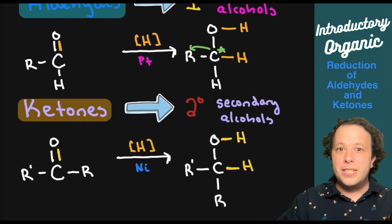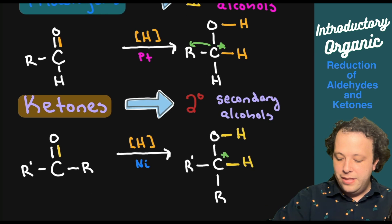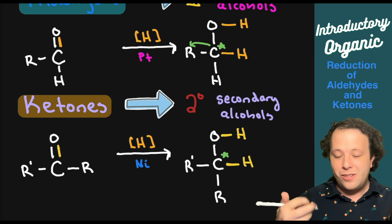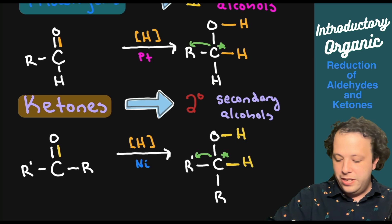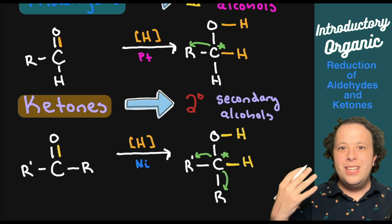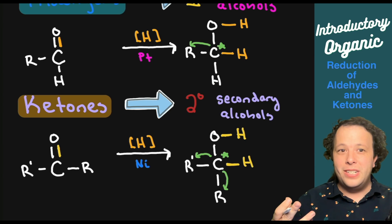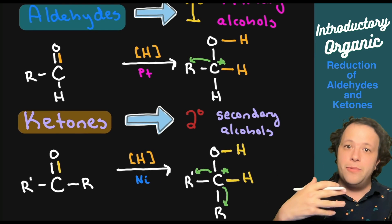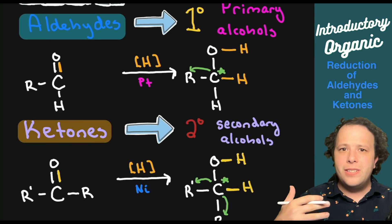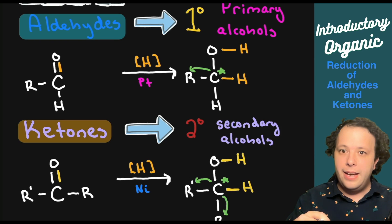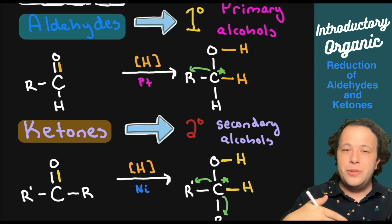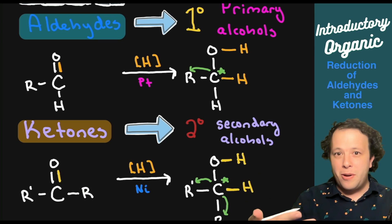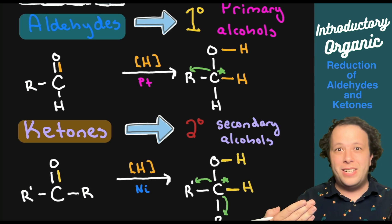This top one is a primary versus this one where we star the carbon with the alcohol and see one and then two R groups. Primary and secondary alcohols can reduce. Sometimes you can also see where a carboxylic acid can reduce to an aldehyde and then to a primary alcohol. Let's go through examples to understand this process.